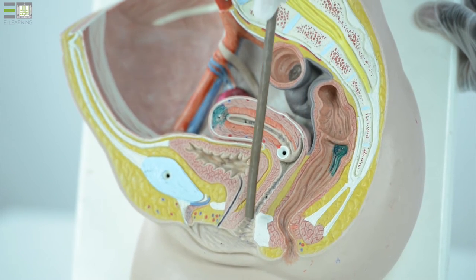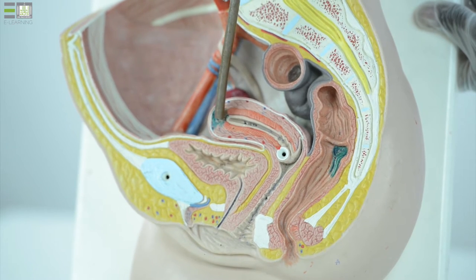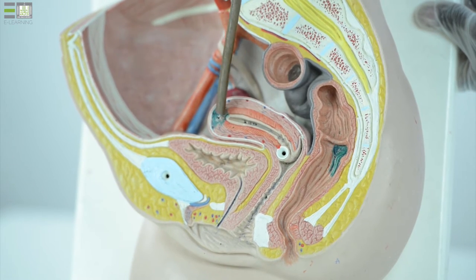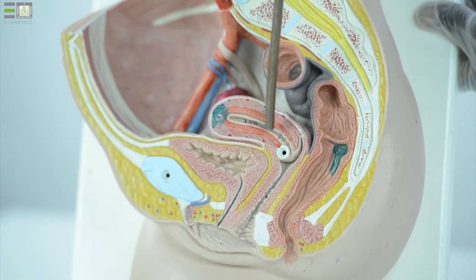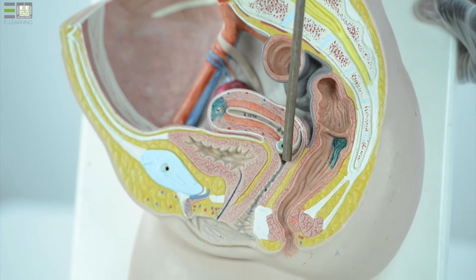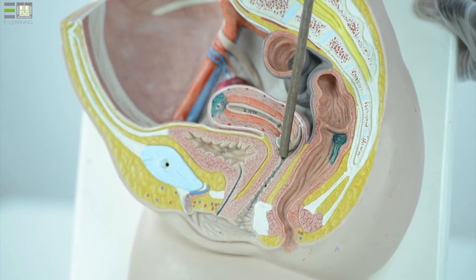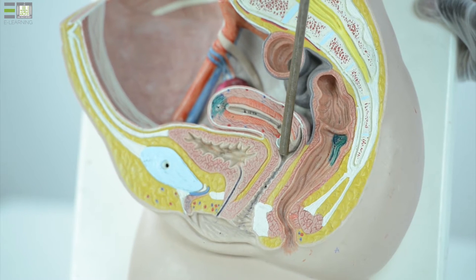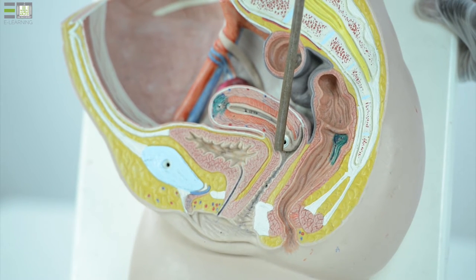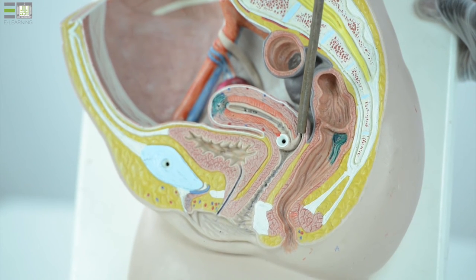Appear the female internal genital organs including the uterus, the three parts of uterus: fundus, body and cervix near the vagina. This is the vagina and its upper extensions, this is the anterior fornix and this one is the posterior fornix.